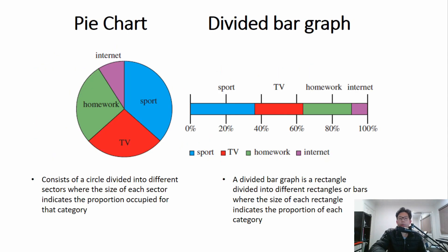Let's start the lesson by looking at what these two charts or graphs are. On the left we have the pie chart and on the right we have the divided bar graph. A pie chart consists of a circle divided into different sectors, where the size of each sector indicates the proportion occupied for that category. The reason it's called a pie chart is because it looks like a pie split up into different pieces. A divided bar graph is a rectangle divided into different rectangles or bars, where the size of each rectangle indicates a proportion of each category.